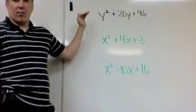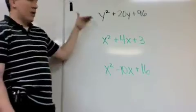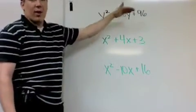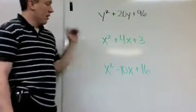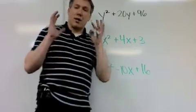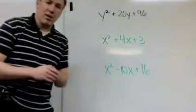I'm only going to factor the top one, but I want you to see the pattern. y² + 20y + 96, x² + 4x + 3, x² - 10x + 16. The same pattern is how you can notice one that can be factored this way.